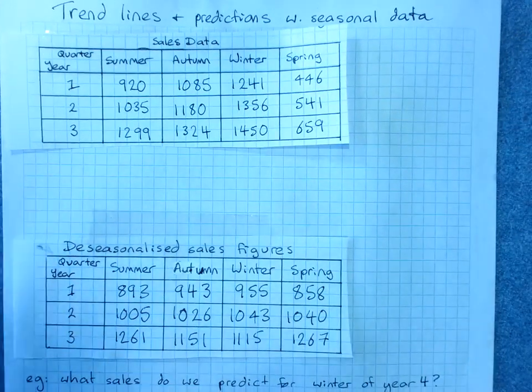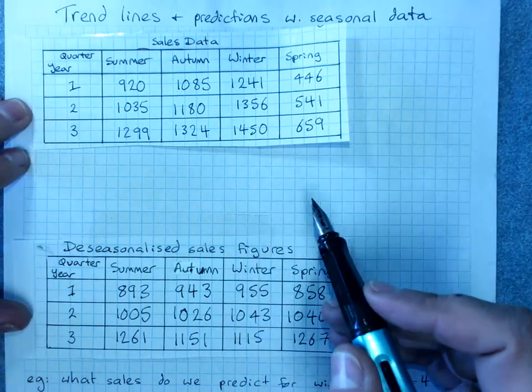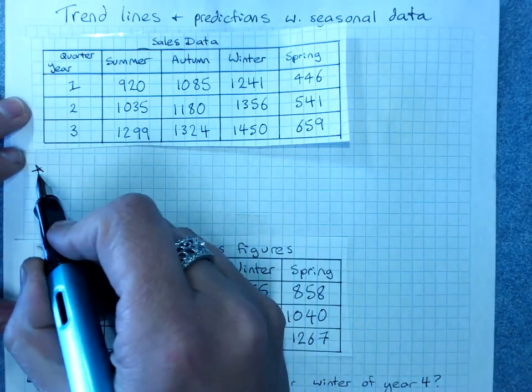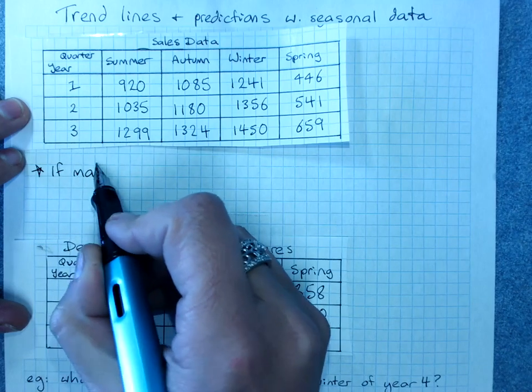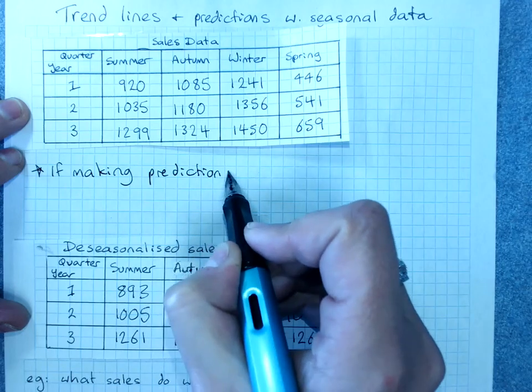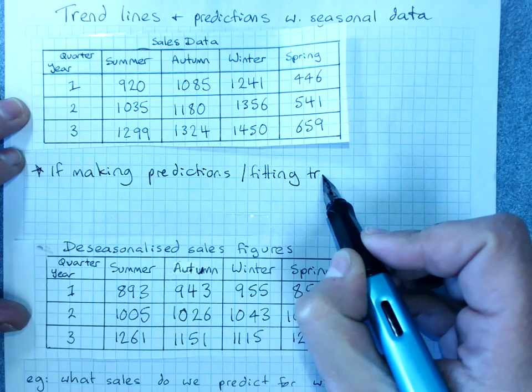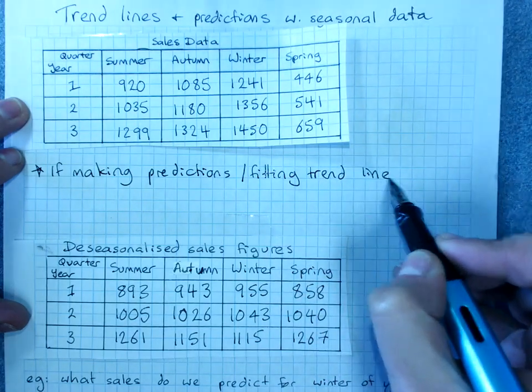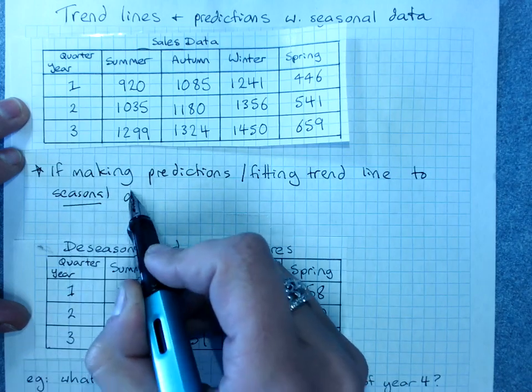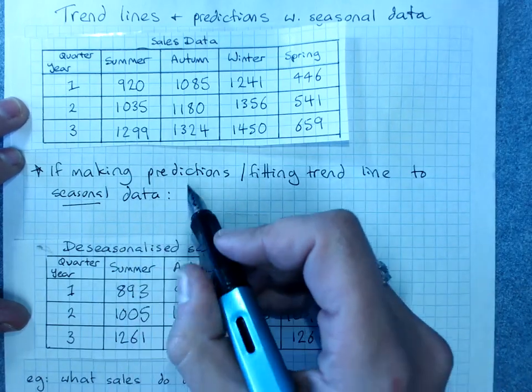If you are doing any forecasting, so predictions, or fitting a trend line to seasonal data, you would de-seasonalize it first. If we're making predictions or fitting a trend line to seasonal data, find and use the de-seasonalized data instead.